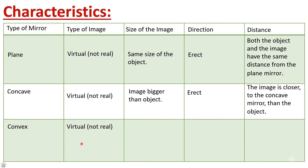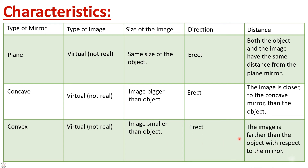For the convex mirror: the type of image is also virtual — not real. The size of the image is smaller than the object. The direction is also erect. And the distance: the image is farther from the mirror than the object.